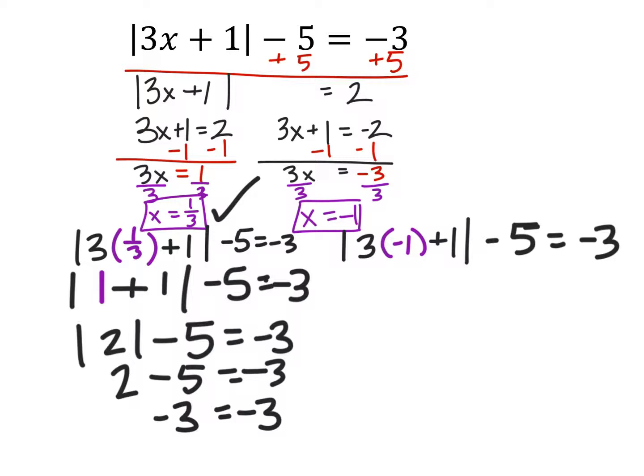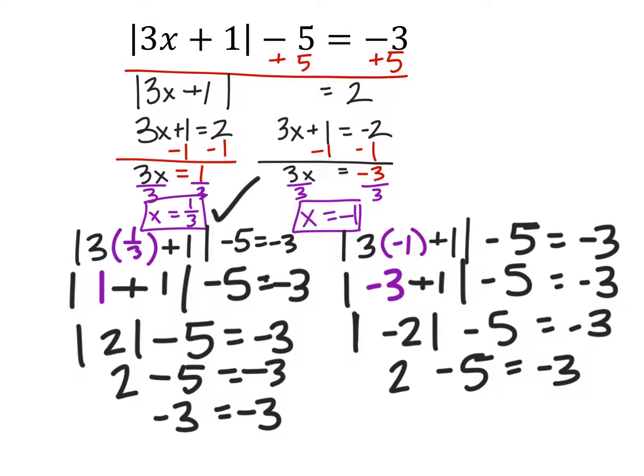Next thing we'll want to do is check that x is negative 1. So 3 times negative 1 is negative 3 right here. And then we have this negative 3 plus 1 which is negative 2 and we'll take the absolute value of that which does equal 2. And then finally 2 minus 5 is negative 3 which is what it's supposed to be, that negative 3. So this one also checks off and we find that our answer is x equals negative 1 and also 1 third.